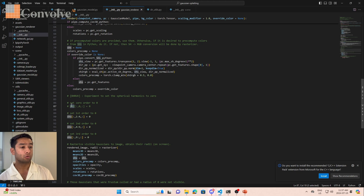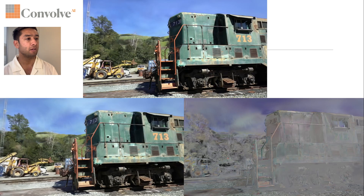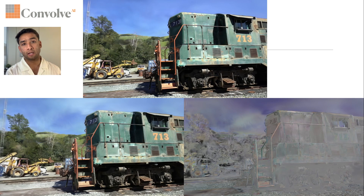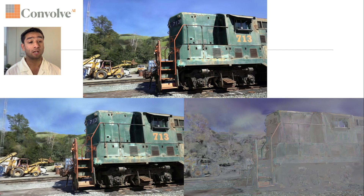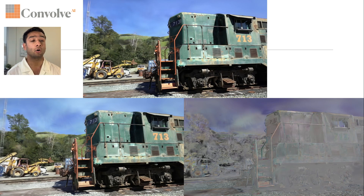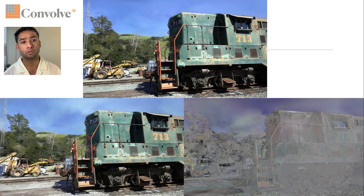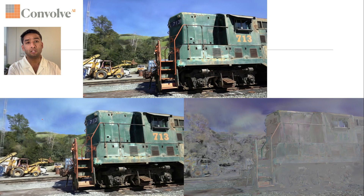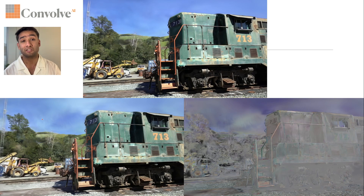The first image is with the entire coefficients from the trained model — nothing has been modified. In the second image, the zeroth order spherical harmonics are kept as-is and everything else — first, second, and third order — is set to zero. You can see that even with higher orders zeroed out, there is quite substantial rendering done. Most of the RGB information in the scene is encoded in the zeroth order spherical harmonics for the R, G, and B channels.